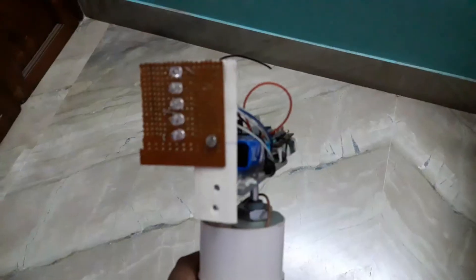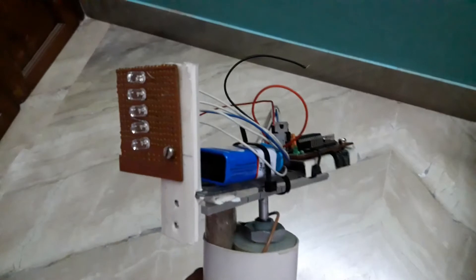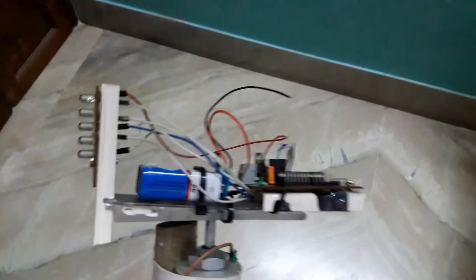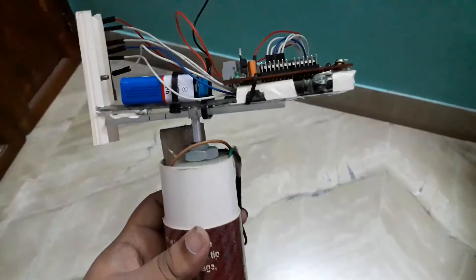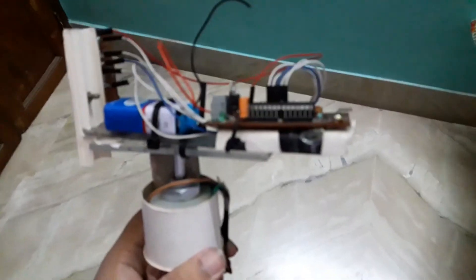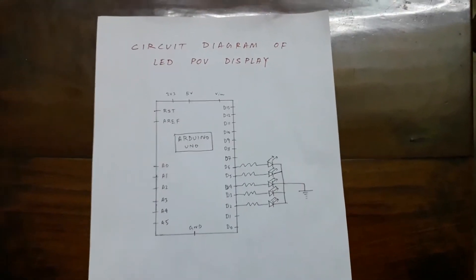Five LEDs, one wearable, one 9-volt battery, one Arduino Uno (you can also refer to as a bare bone), one DC motor, and this is the holder for holding the motor. So now let us come to the circuit diagram of this LED POV display.